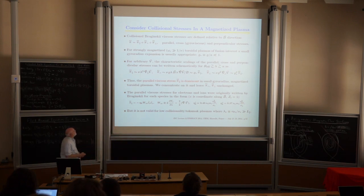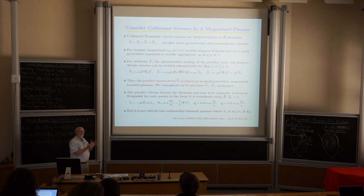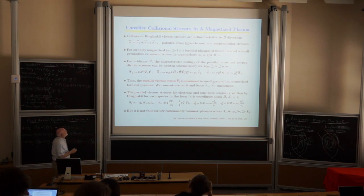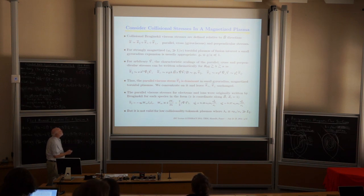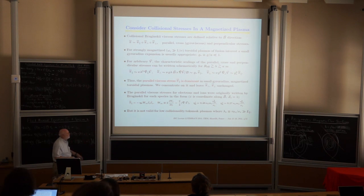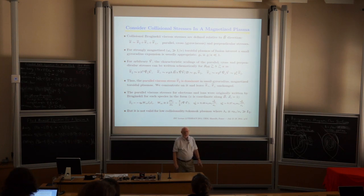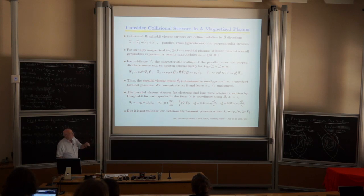The parallel stress scales as collision frequency times collision length times del_parallel V. The diamagnetic type scales as B cross grad V — of order rho_star compared to the parallel stress. Perpendicular pi is very small — about ten to the minus six. So we need to focus on the parallel bumpiness and concentrate on the parallel stress.